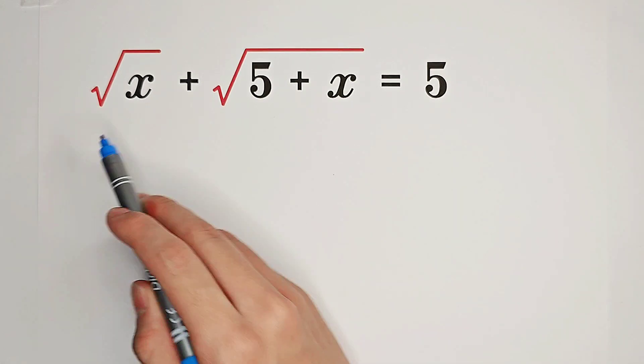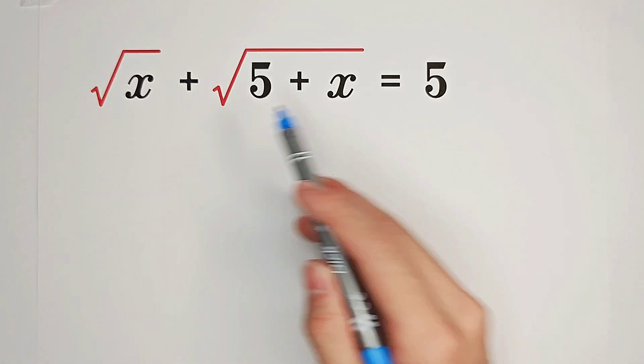Solve the equation: square root of x plus square root of 5 plus x equals 5.